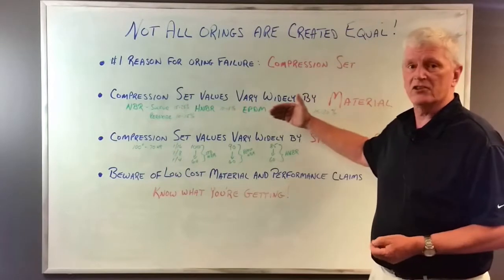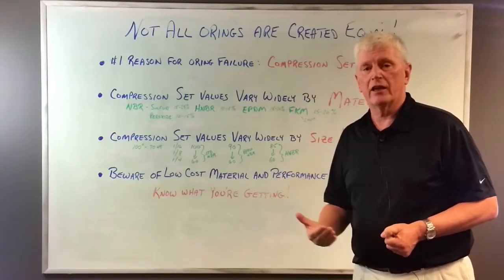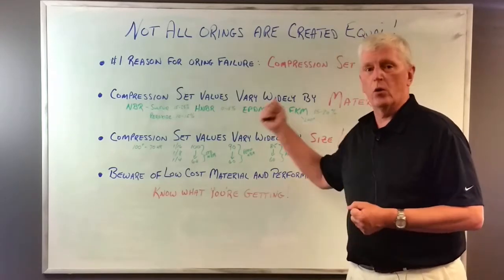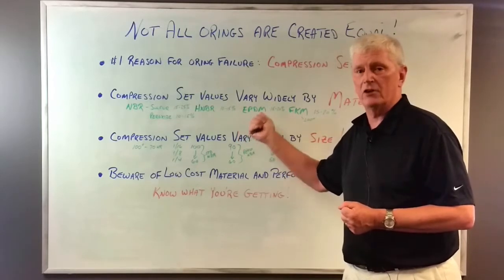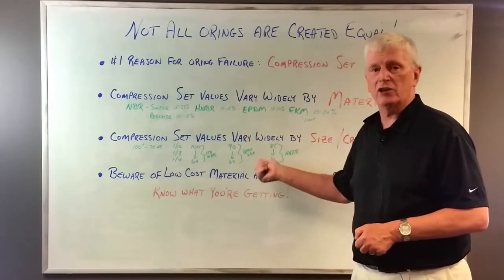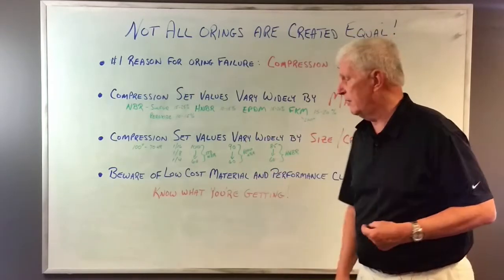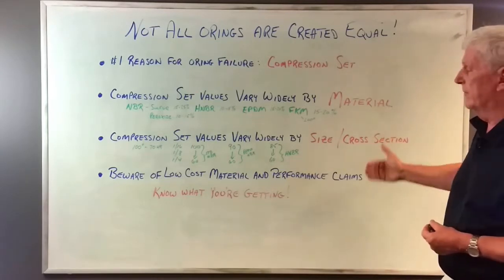So wide variances. When you're looking at physical properties and when you're looking at compression set from your suppliers, understand what are you looking at? Am I looking at raw materials, slabs, buttons, dog bones, or am I looking at actual O-rings? And what are those figures and those values that you want to be able to measure to? Size and cross-section do matter.